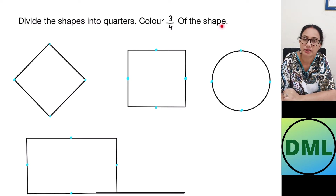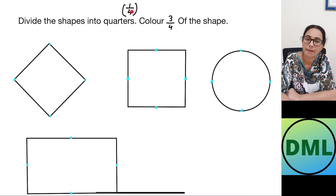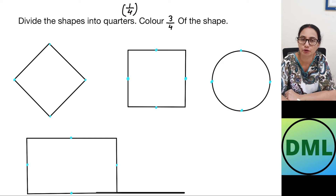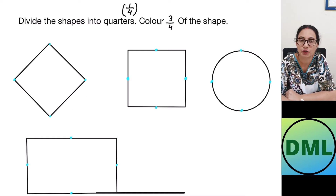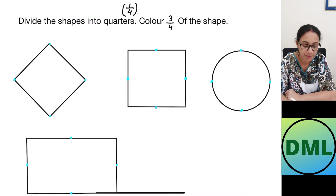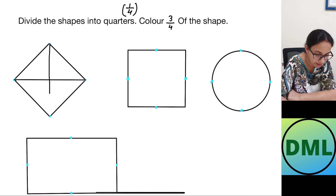Now let's see one more example: divide the shapes into quarters and color three by four of the shape. Quarters means one by four — the shape must have four equal parts. So I have to divide my shape into four equal parts. This is my square, and there are many ways to divide a shape into four equal parts.